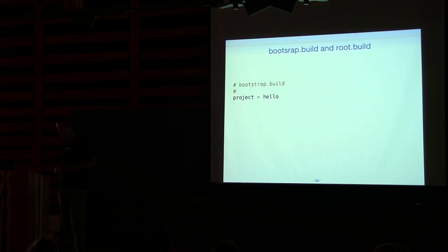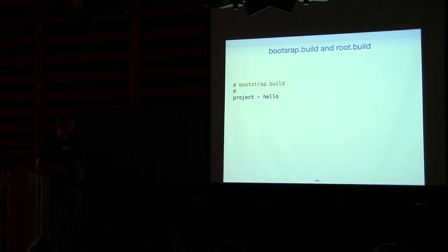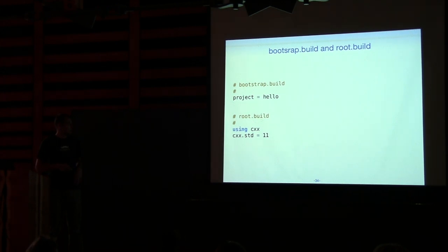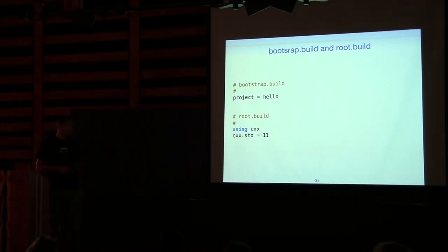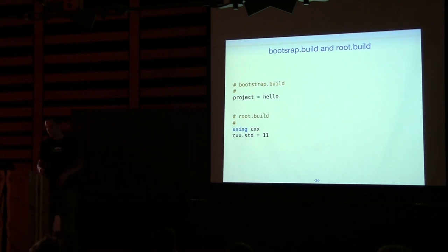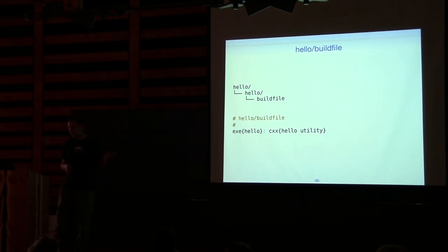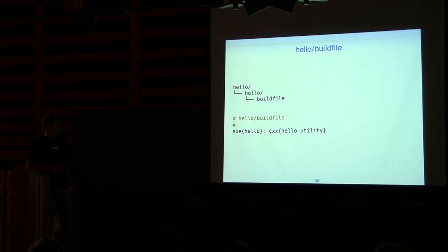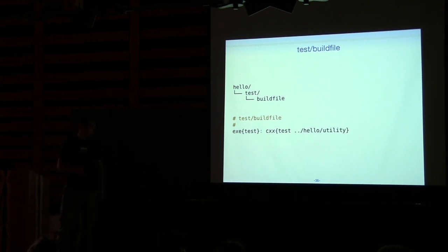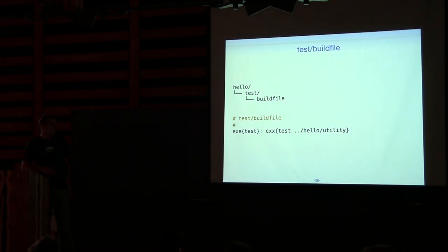Let's look at the bootstrap and root build files for our Hello project. Bootstrap is very simple — we just specify the project name. The root build file: all our source is C++, we load the C++ module once and set the standard to C++11 as project-wide settings, so we don't have to repeat ourselves. The build file in the hello directory is now a one-liner. And the build file in the test directory is pretty much the same, using a relative path to get the utility source file from the hello subdirectory.